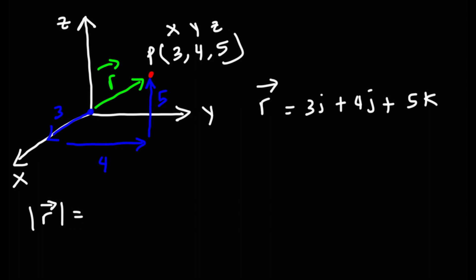Now, if it's for a 2D coordinate system, it's going to be the square root of x squared plus y squared. But for a 3D coordinate system like the example that we have, it's going to be also plus z squared inside of a square root symbol. So for this problem, it's going to be the square root of 3 squared plus 4 squared plus 5 squared.